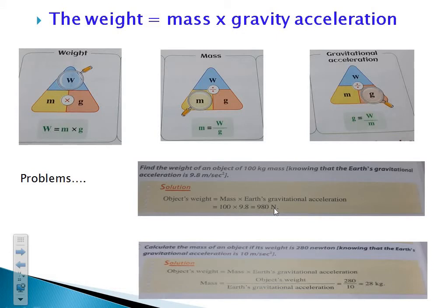Don't forget to write the measuring unit in science problems — put the rule and the measuring unit. The second problem: you are asked to calculate the mass. You are given the weight of the object equals 280 Newton, and the gravitational acceleration equals 10 meters per second squared. From the magic triangle, mass equals weight over gravitational acceleration, which equals 280 over 10, which equals 28 kilograms.